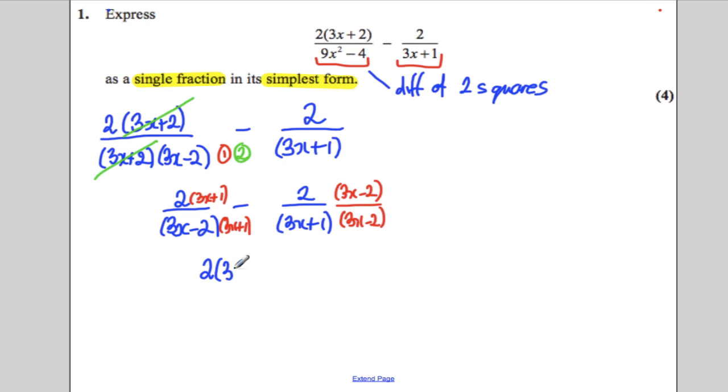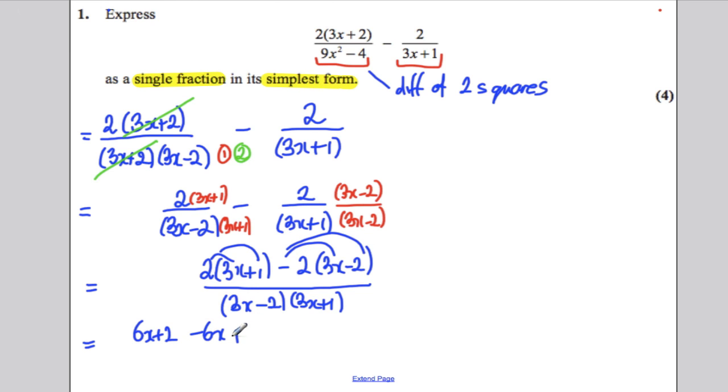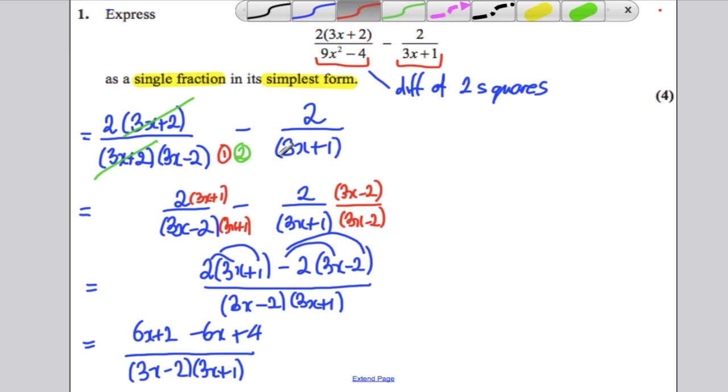So you would get 2 times 3x plus 1, subtract 2 times 3x subtract 2, all over 3x subtract 2 times 3x plus 1. Now you should have your equals going down the page here by the way. Now you should multiply these out. This would be 6x plus 2, and this would be minus 6x plus 4.